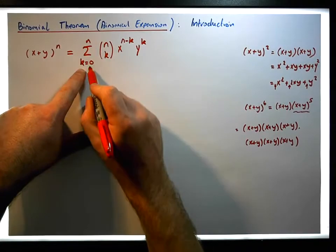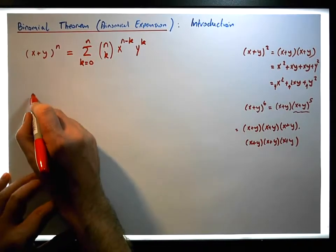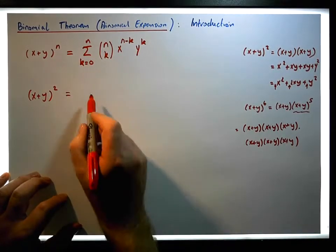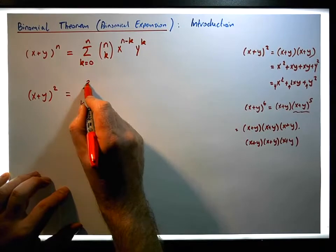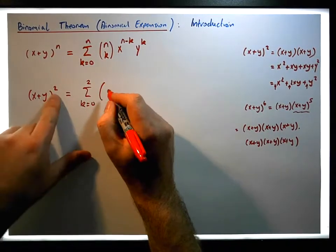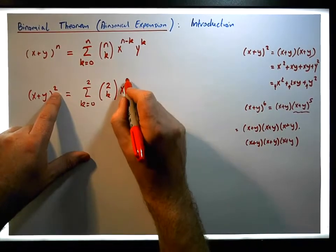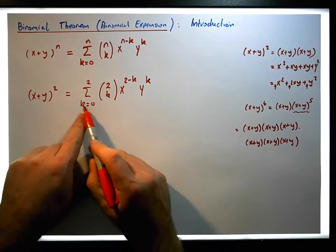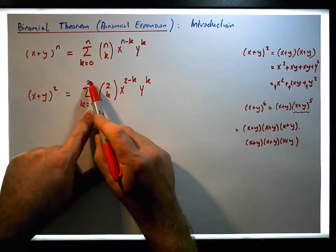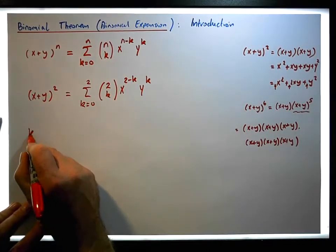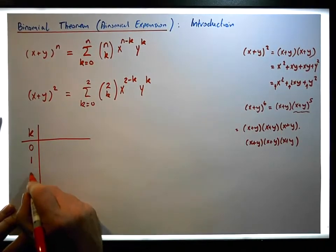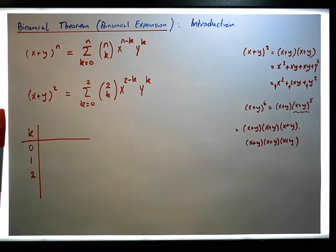It looks a little bit complicated, but let's see what it's actually saying if we expand this out. For argument's sake, let's calculate x plus y squared. The n in this case is two, so what we need is the sum from k equals zero to two of 2-choose-k times x to the power of two minus k times y to the power of k. We need to sum across this iteration where k goes from zero, one, up to two.